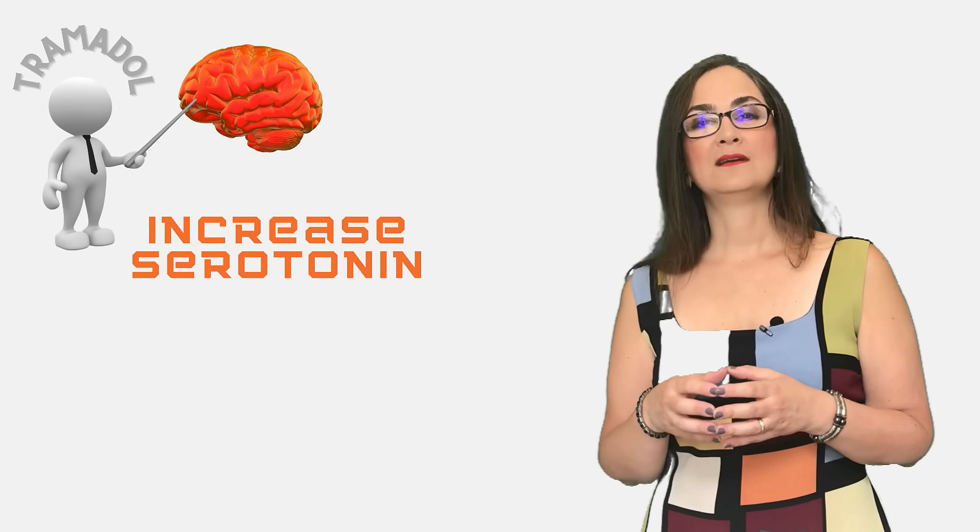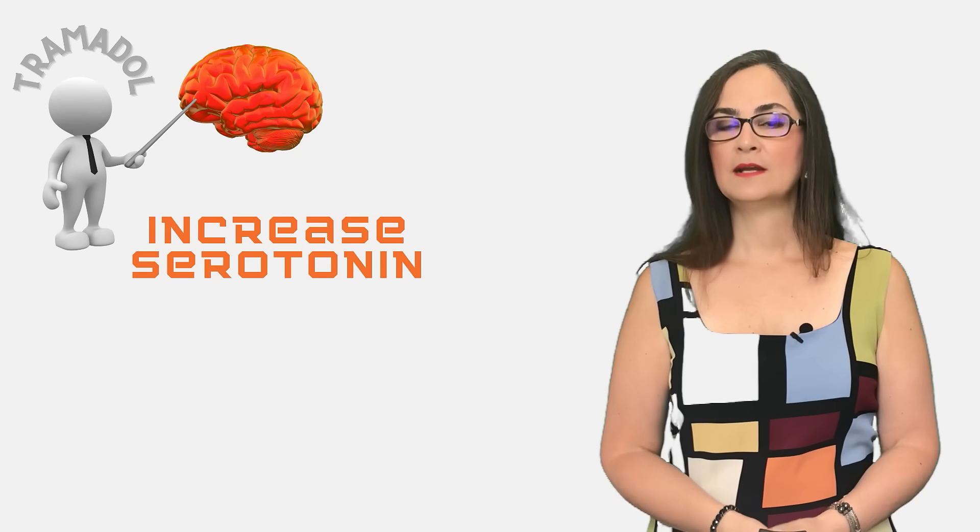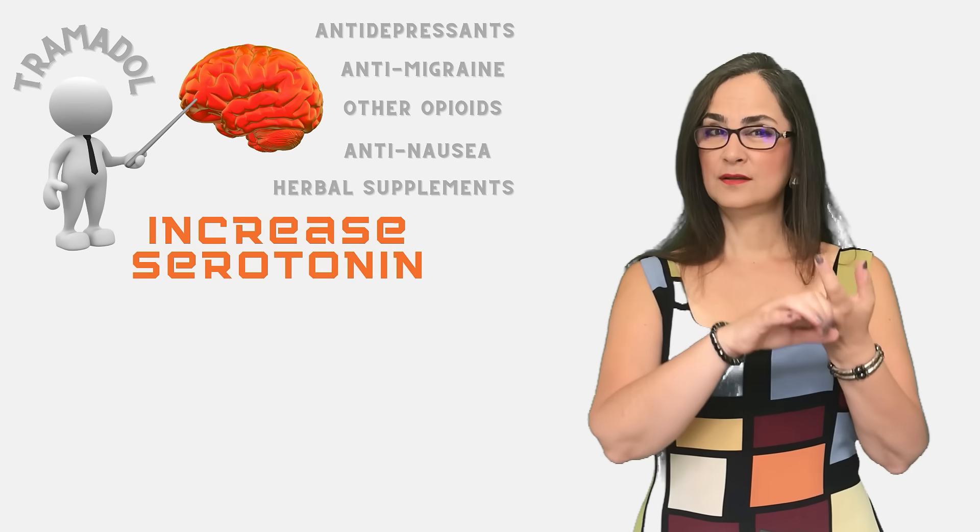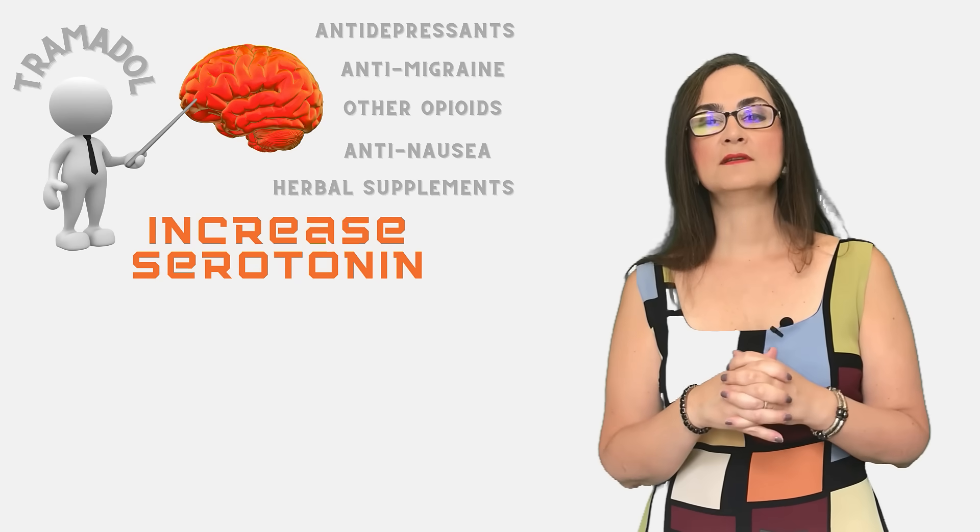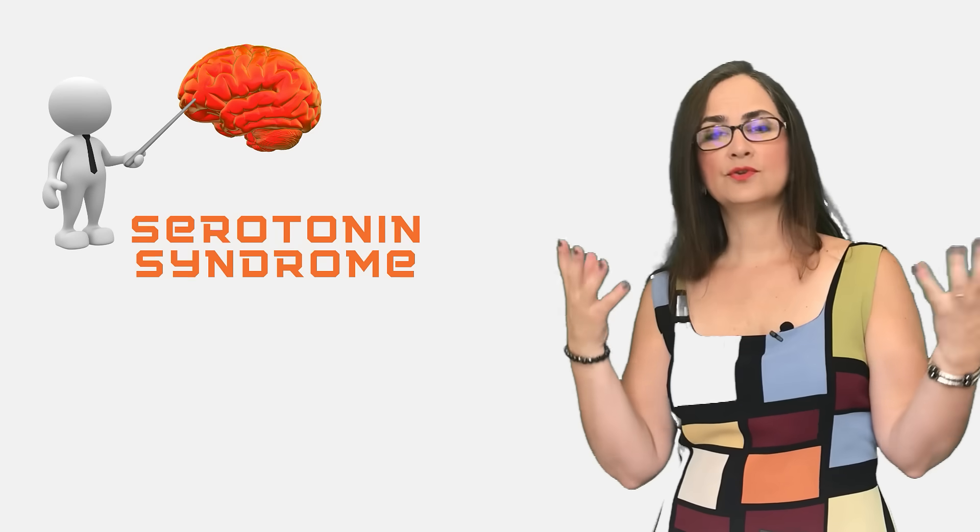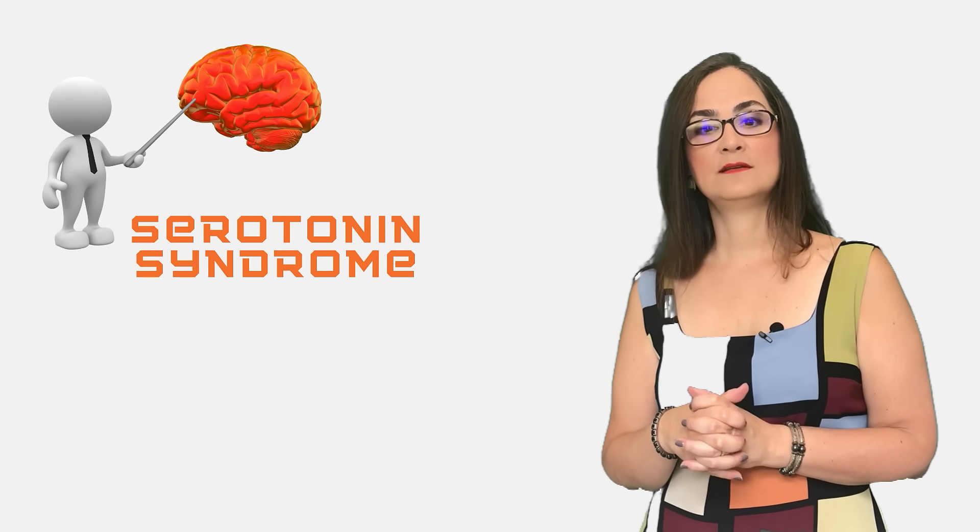People with chronic pain who take Tramadol usually take other medications that also increase serotonin in their brain, like antidepressants, anti-migraine, other opioid medications, anti-nausea, and even some herbal supplements. When too much serotonin accumulates in the brain, there is the risk of serotonin syndrome.